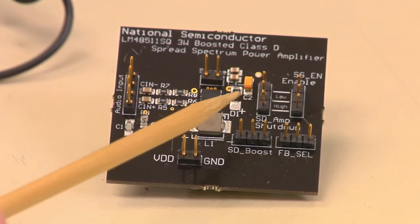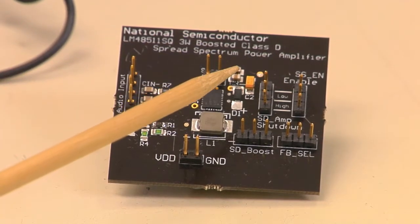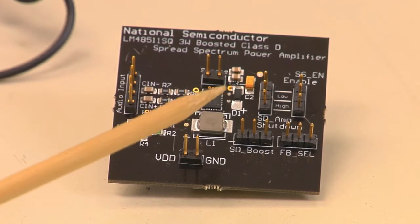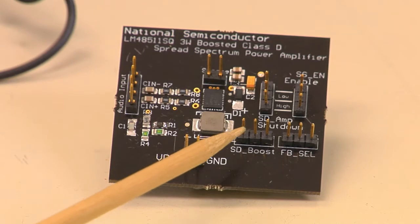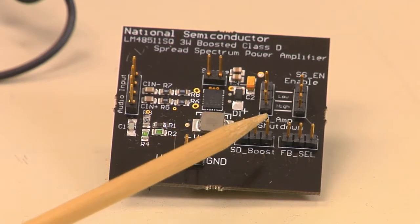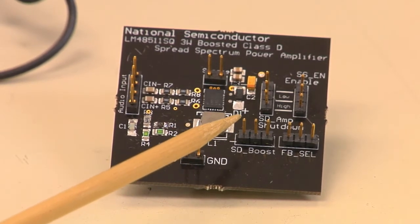The programmability is right here. This part has the ability to shut down both the Boost Converter and the Class D separately, and that's done here. The Boost Converter has a high and low control here that you can shut that down separate from the Class D.